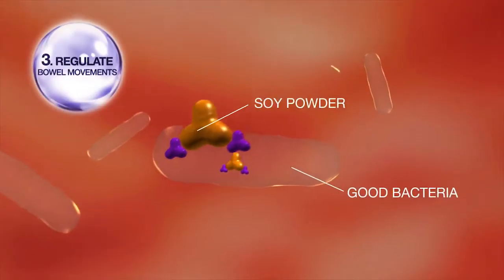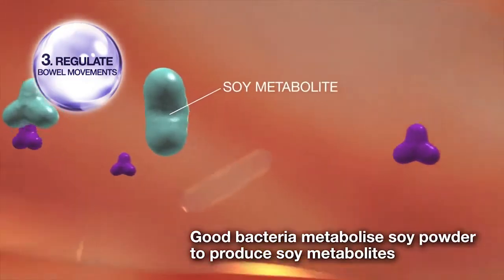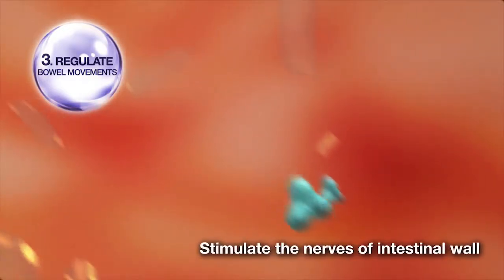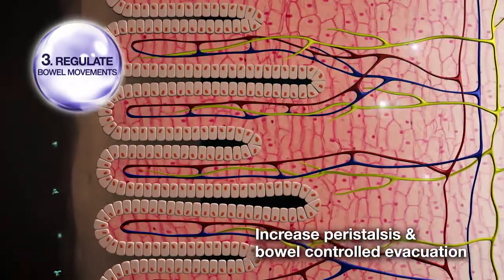Step 3. Regulate bowel movements. The good bacteria in our intestines also metabolizes soy powder to produce soy metabolites. It helps to stimulate the nerves of our intestinal wall to increase peristalsis and control bowel evacuation.